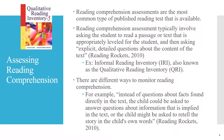Assessing reading comprehension can involve informal and formal assessments. Formal assessments typically include students reading a passage or text that is appropriately leveled for the student and answering explicit, detailed questions about the content. For example, the Informal Reading Inventory, also known as the Qualitative Reading Inventory, is a formal assessment used to assess reading comprehension. There are also different ways to monitor reading comprehension informally — for example, instead of questions about facts found directly in the text, the child could be asked to answer questions about implied information or to retell the story in their own words. These informal methods also give students another outlet to express their ideas.